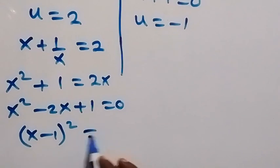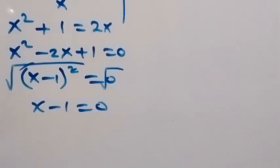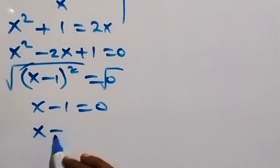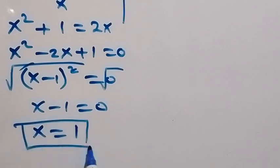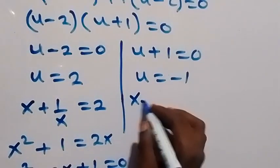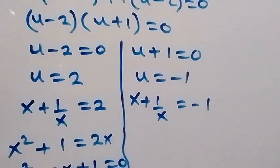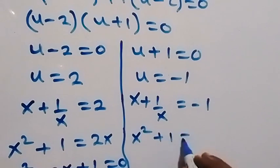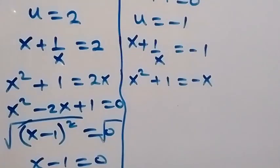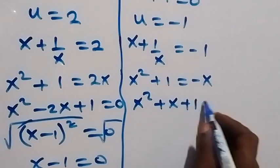This summarizes as x minus 1, all squared, equals to 0. Taking the square root of both sides gives x minus 1 equals 0, so x equals 1. That is the first solution. For the second case, x plus 1 over x equals minus 1. Multiplying through by x gives x squared plus 1 equals minus x, so x squared plus x plus 1 equals to 0.